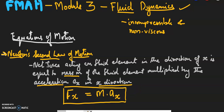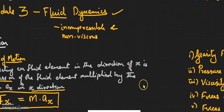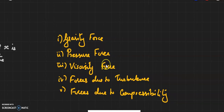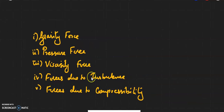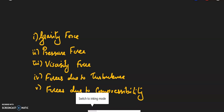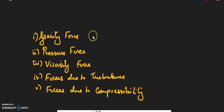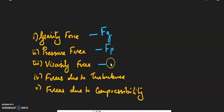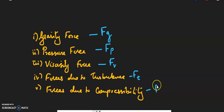The main forces present in fluid flow are: gravity force, pressure force, forces due to viscosity, forces due to turbulence, and forces due to compressibility. For convenience, these are represented as Fg (gravity), Fp (pressure), Fv (viscous), Ft (turbulence), and Fc (compressibility).